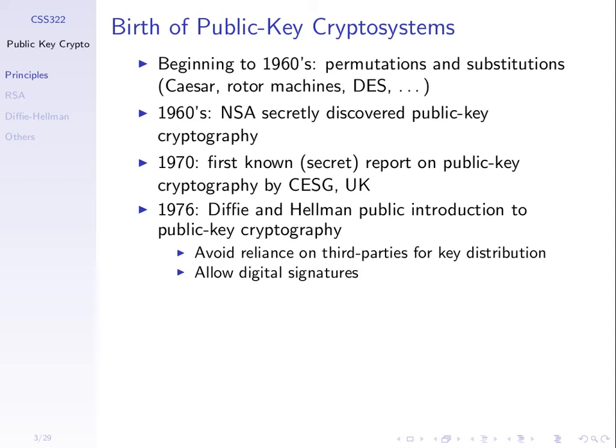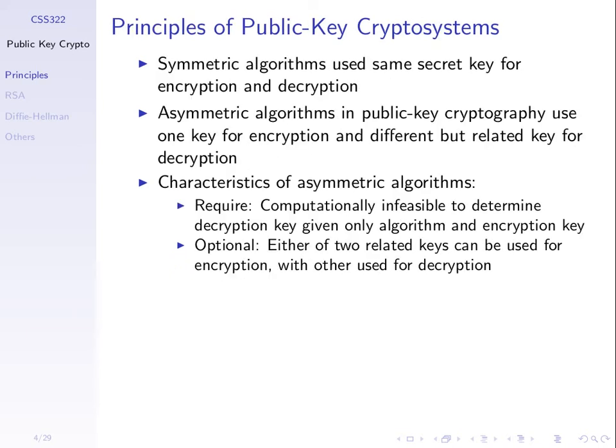Shortly after Diffie-Hellman, other algorithms were developed, including RSA — developed by Rivest, Shamir, and Adleman. Public key cryptography is also called asymmetric cryptography because we don't use the same key for encrypt and decrypt. We have two different keys: one for encryption and a different key for decryption.